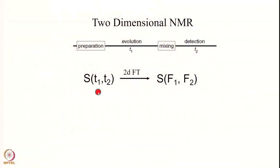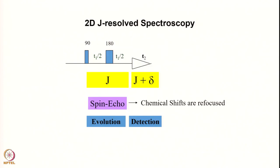This is the principle of two-dimensional NMR: the signal S(T1, T2) is a time-domain signal with two time components T1 and T2. You perform a two-dimensional Fourier transformation to generate two frequency axes F1 and F2 — these are independent Fourier transformations that can be done in either order. We will now look at examples of various kinds of 2D experiments, describing their pulse sequences and the information each experiment provides.